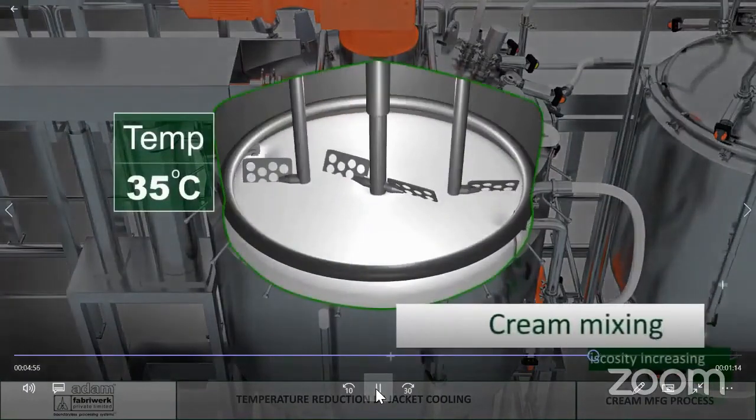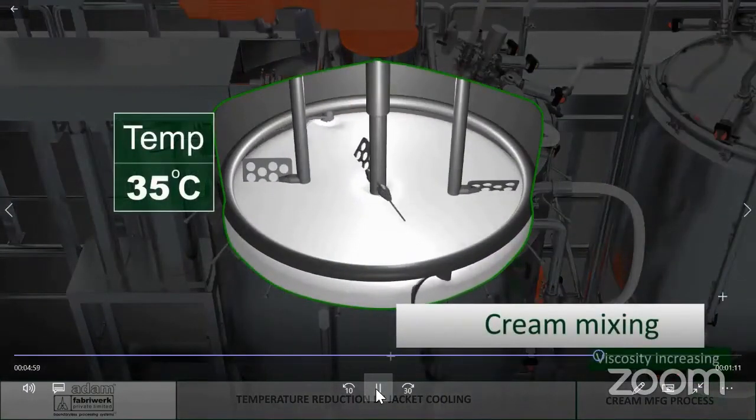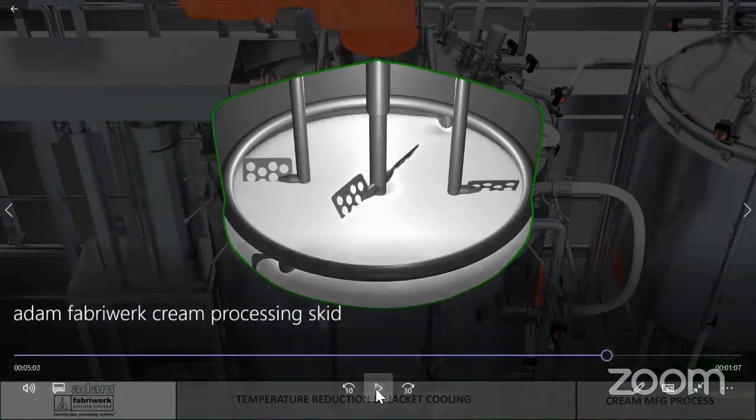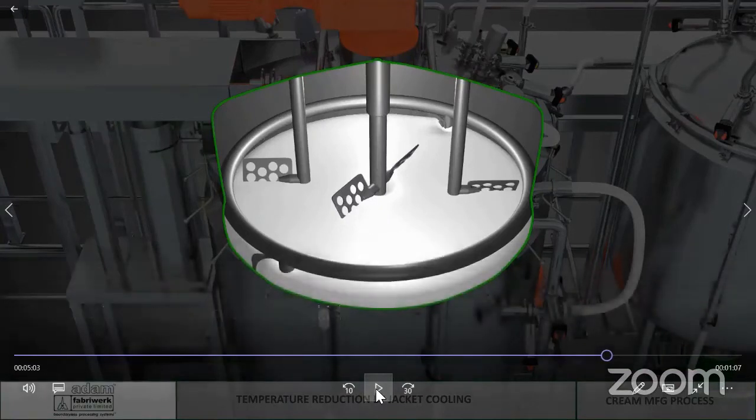Once the product is cooled down, you can see the anchor moving very slowly to ensure that mass movement is carried out. This moves the product within the vessel and it is scraped from the walls. It is very important to note that the high shear is not operated once the emulsion formation is done. Over-operation of the high shear may also lead to low viscosity or damage the product.